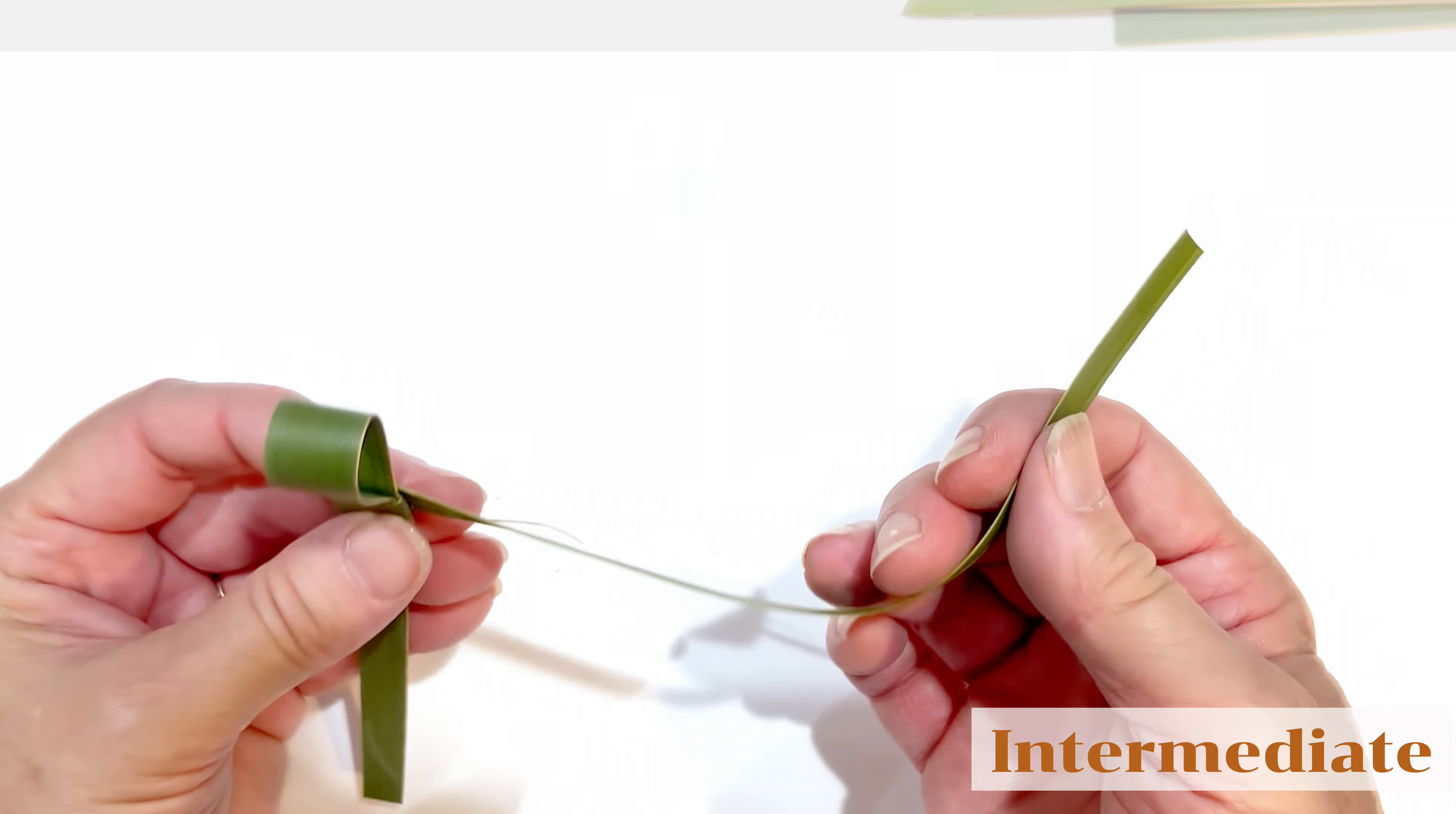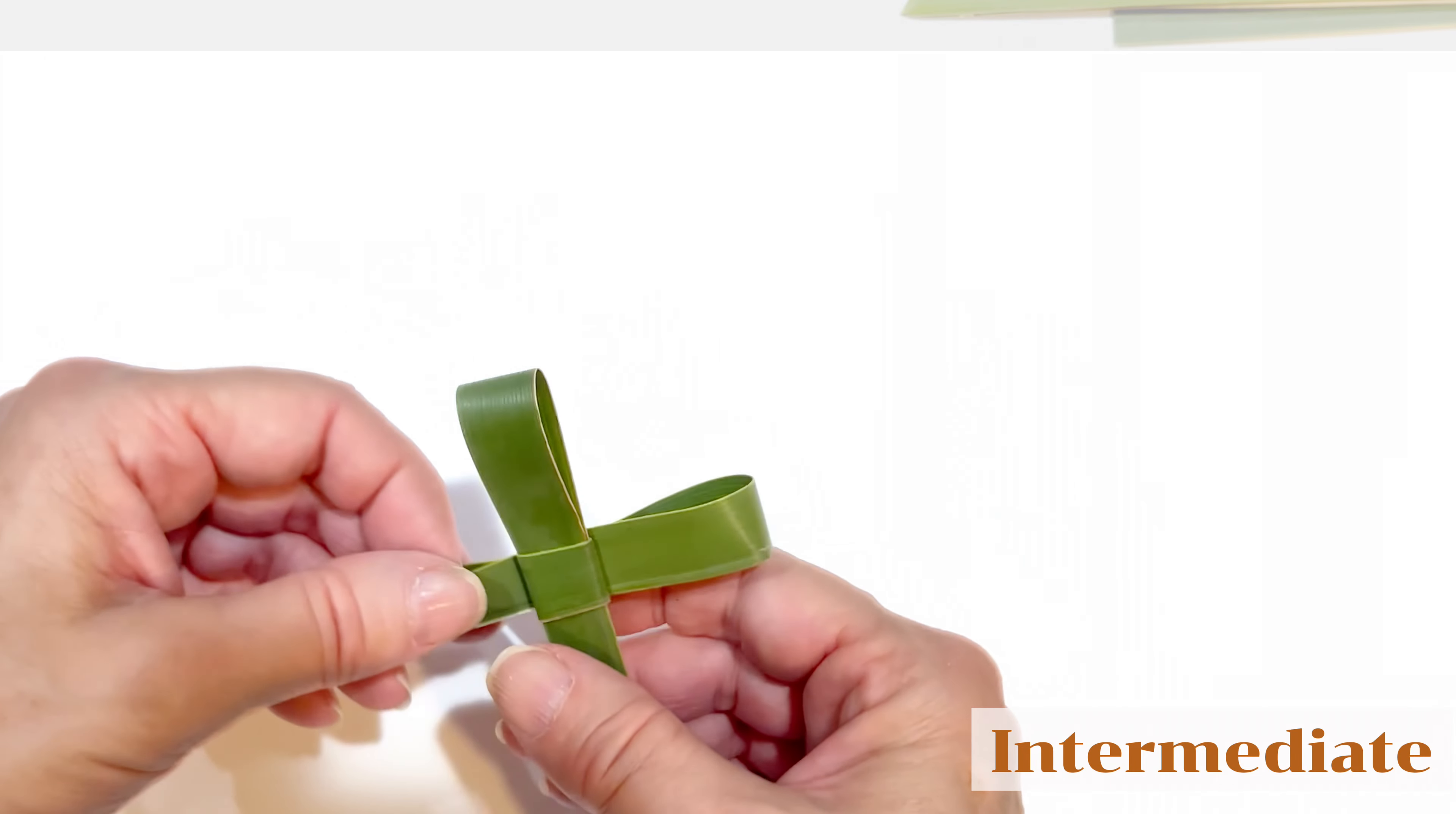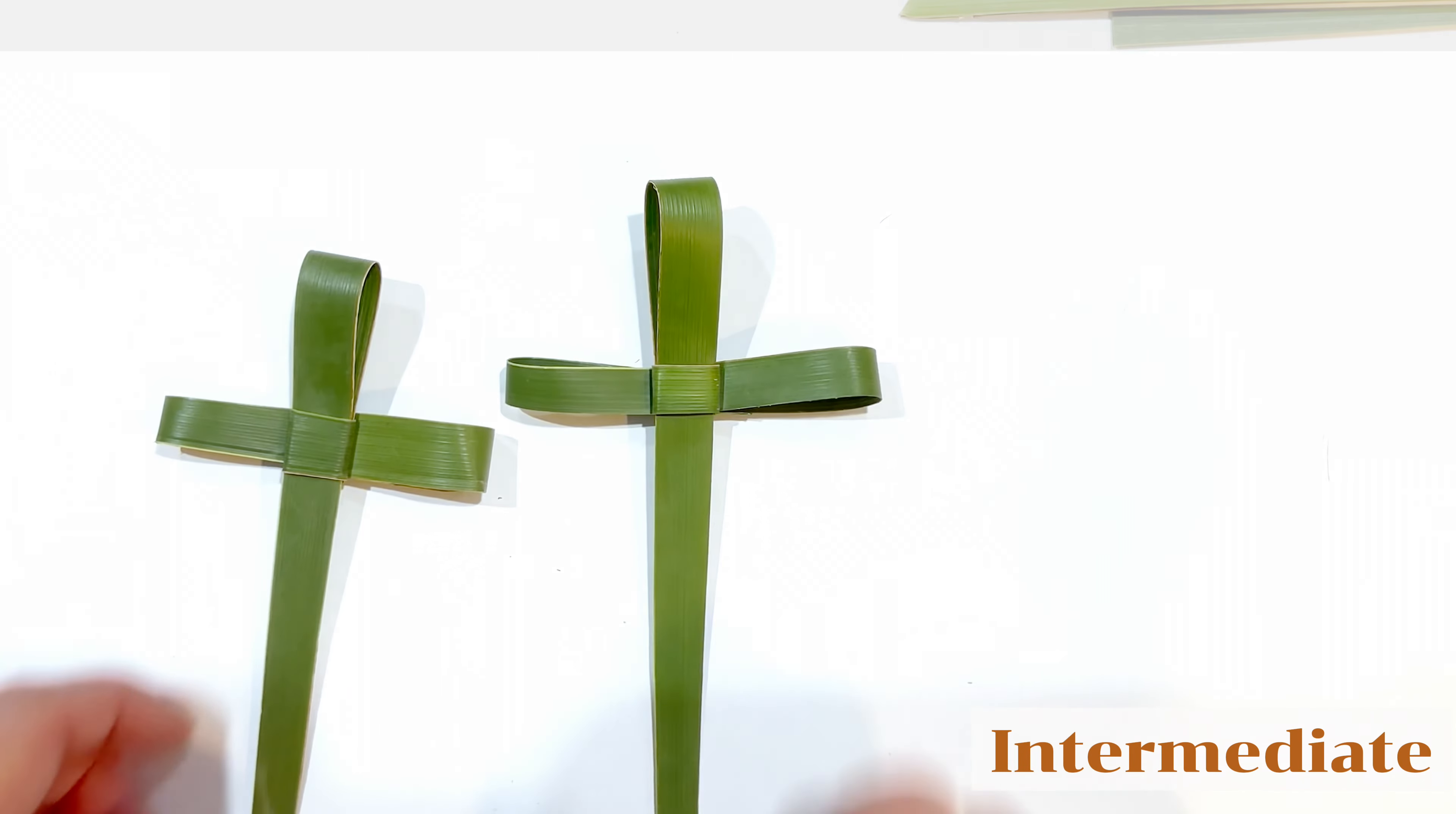Take this side one, and you're going to loop it behind in this part right here. And then you're going back through that same pocket on the other side to loop it through. And you have a cross like this. Okay, so now we have two.